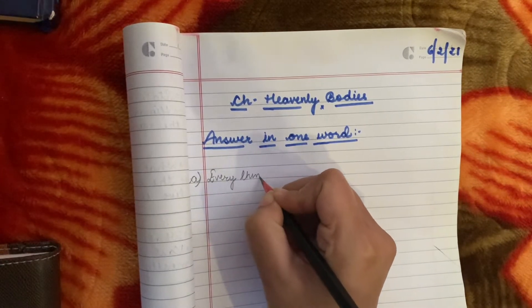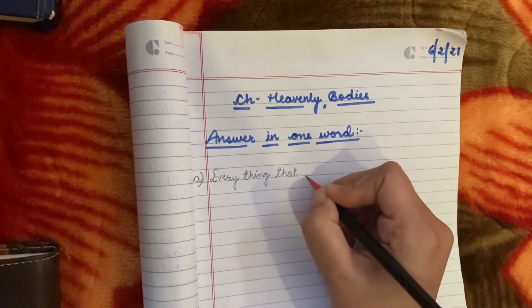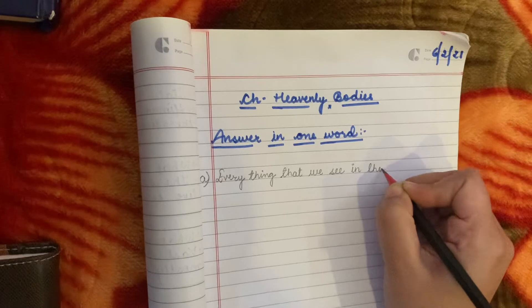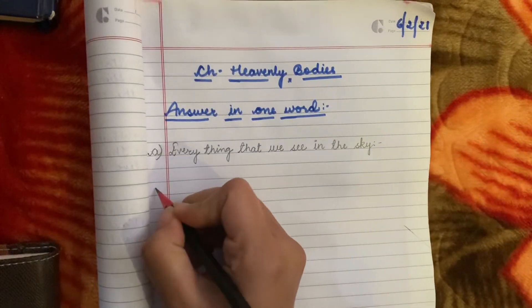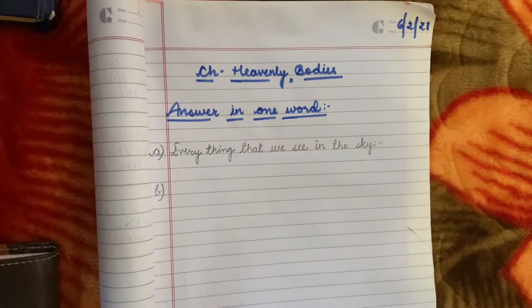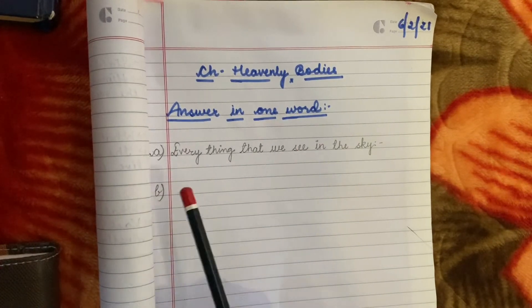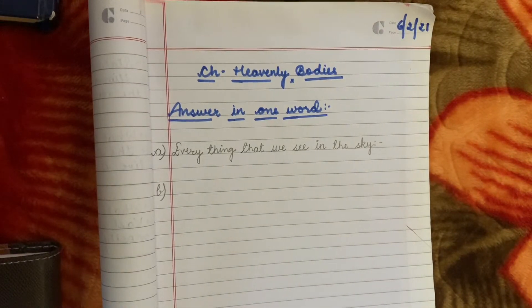Question A: Everything that we see in the sky. Now you have to write the answer here. Leave one line for the answer and then leave one extra line — so you have to leave two lines total. Note it down: Everything that we see in the sky.